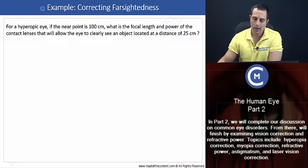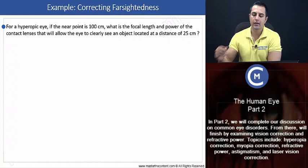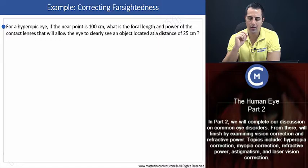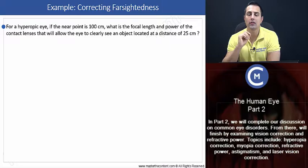Now beginning with our example on correcting farsightedness. Let's begin by reading our problem. For a hyperopic eye, if the near point is 100 centimeters, what is the focal length and power of the contact lens that will allow the eye to clearly see an object located at a distance of 25 centimeters?